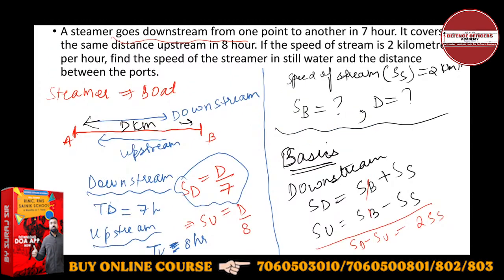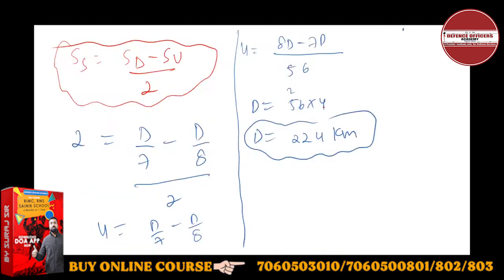Now you have to find the speed of boat. Since D is found, SD will also come. SD will be D by 7, which is 224 by 7, equals 32. SU will be D by 8, which is 224 by 8.